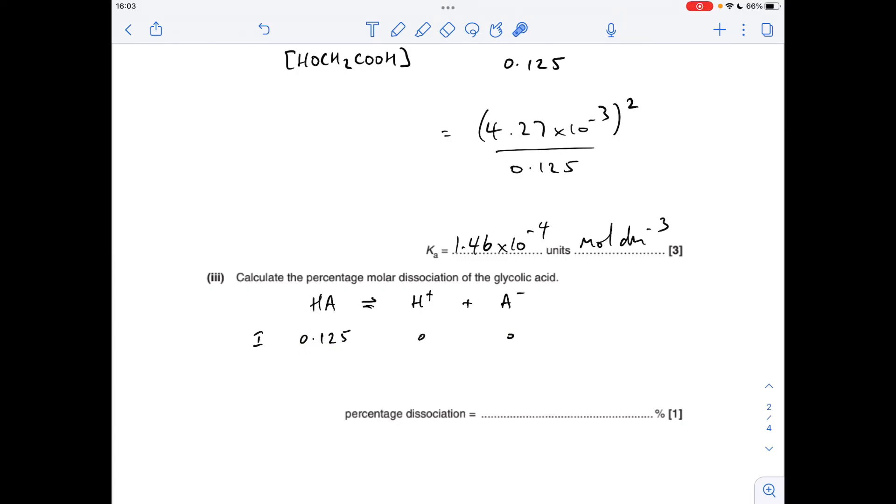And then if we think about after dissociation's occurred, we knew that the concentration of H-plus ions from the pH was 4.27 times 10 to the minus 3. So to generate the H-plus ions, obviously, the same number of moles of HA has dissociated. So the percentage dissociation is going to be the amount dissociated over the original times 100, which you can see comes out at 3.41%.